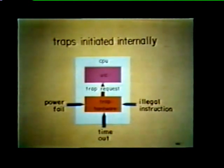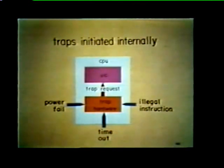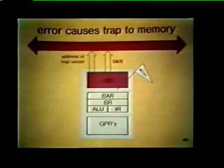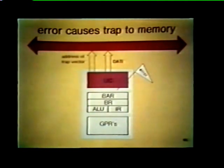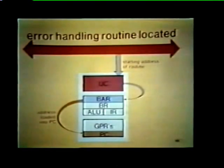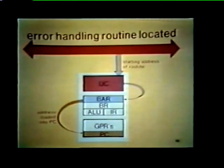This hardware is designed to detect certain predetermined conditions, such as power fail, time out, or illegal instructions. Whenever one of these conditions is detected, the unibus control is alerted. The unibus control responds to the trap by placing the address of a trap vector on the bus address lines. This vector contains the starting address of the error handling routine. The unibus control initiates a data I transfer to retrieve this starting address, then routes it to the program counter by way of the bus address register, or BAR. The processor is then ready to retrieve and execute the first instruction in the error handling routine.